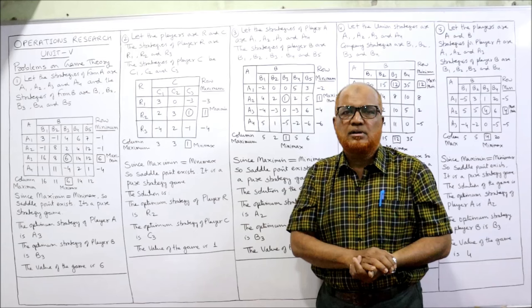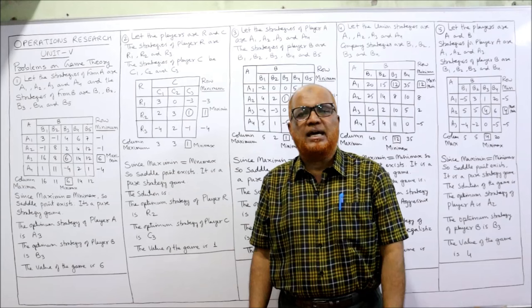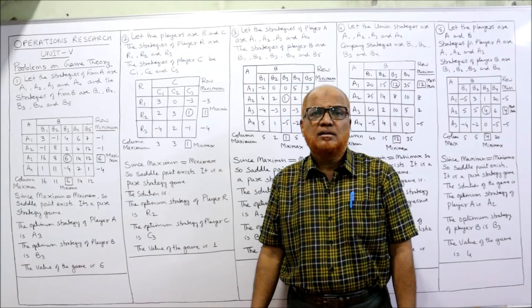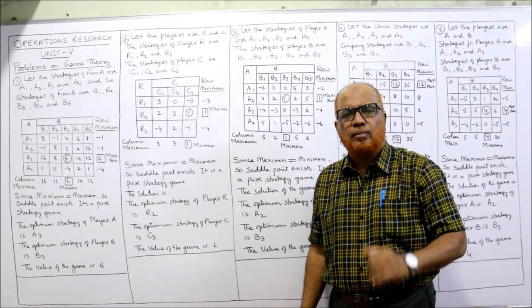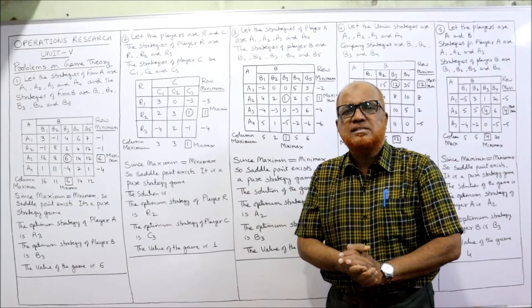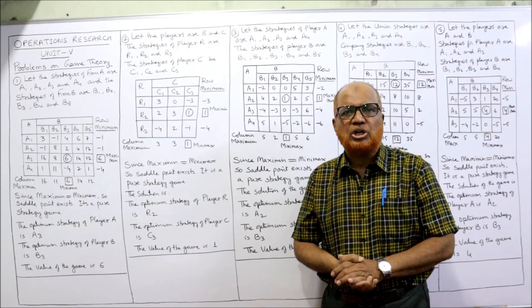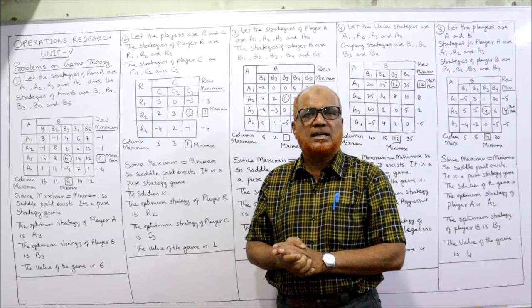We discussed two types of strategies: pure strategy and mixed strategy. A pure strategy exists when the saddle point exists — the saddle point is a point at which maximin and minimax are both equal. In a pure strategy game, every party adopts a single strategy. For example, player A has strategies a1, a2, a3, a4 and adopts only a3, while player B has strategies b1 through b5 and adopts only b1. Mixed strategy means a player uses a mixture of strategies.